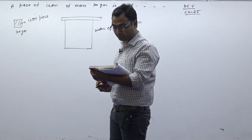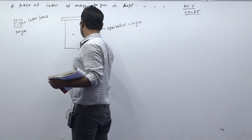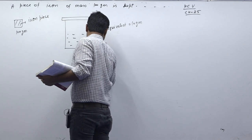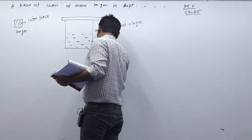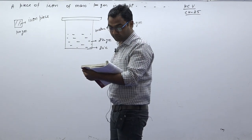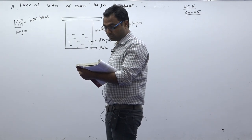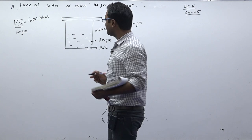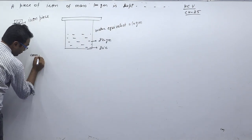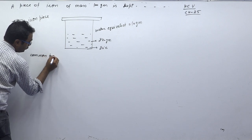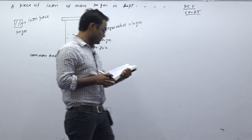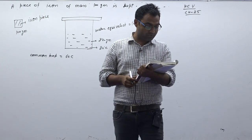The calorimeter contains 240 grams of water at 20 degrees Celsius. The mixture attains an equilibrium temperature of 60 degrees Celsius. We need to find the temperature of the furnace.